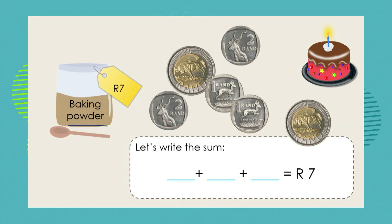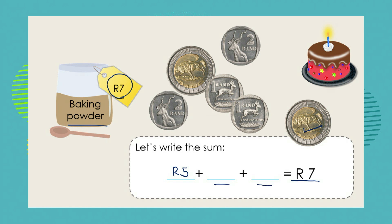Next we have baking powder and it costs R7. Which three coins can we use to give us a total of R7? We start with our R5 coin. Now we need two more coins. We can ask: what is R7 minus R5? That leaves us R2, and we need two coins. We can't use a single R2 coin because that's only one coin, so we use two R1 coins. R5 plus R1 plus R1 gives us a total of R7, so we have paid for our baking powder.